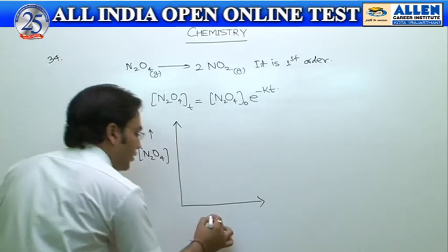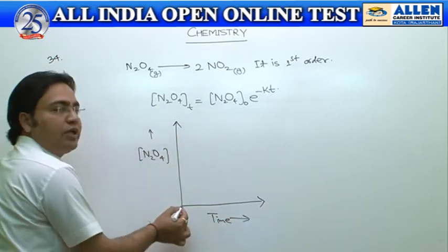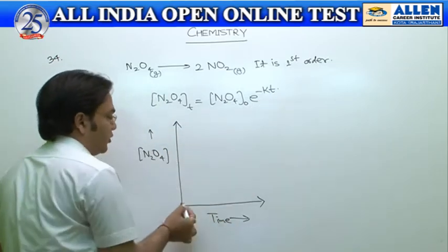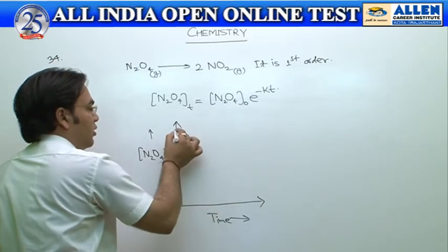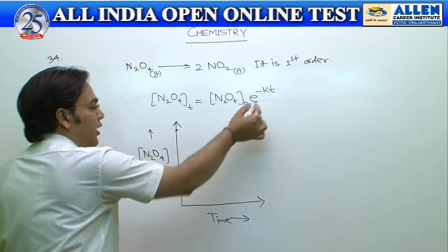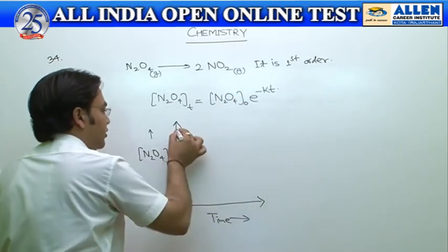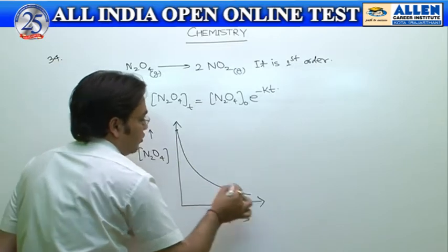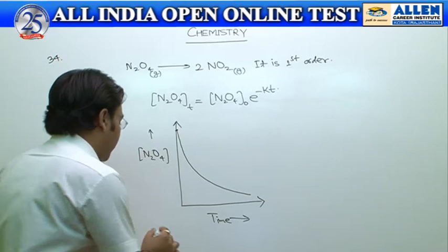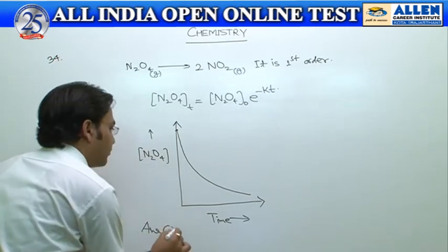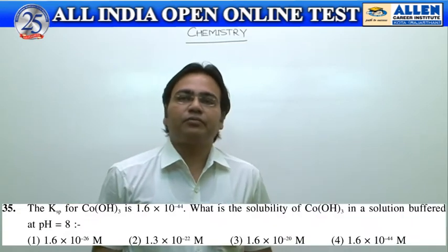...of N2O4 and time: initially when time t equals zero, the concentration of N2O4 will be maximum, equal to N2O4 naught. And when time increases, it exponentially decreases. The graph should be like this. Hence, the correct option should be fourth.